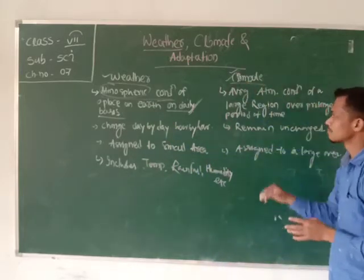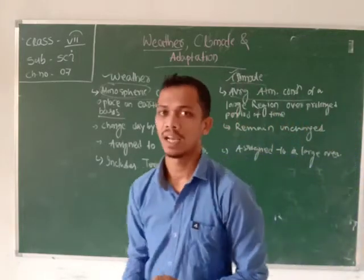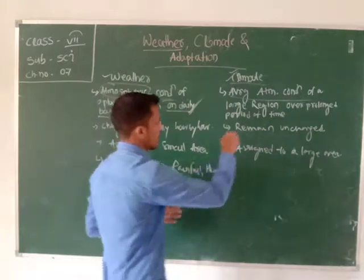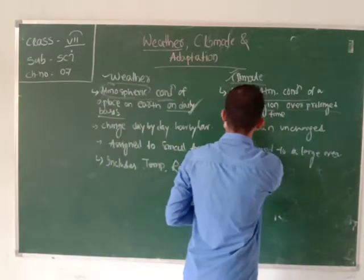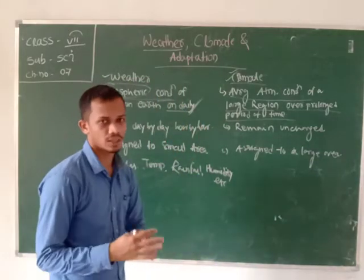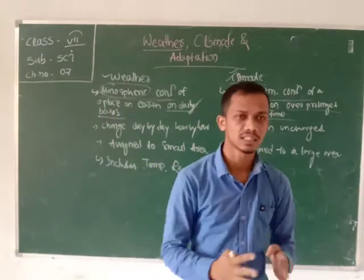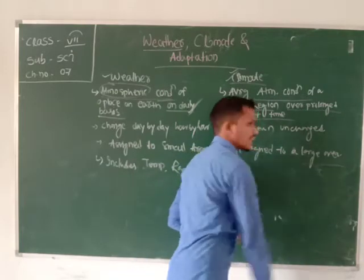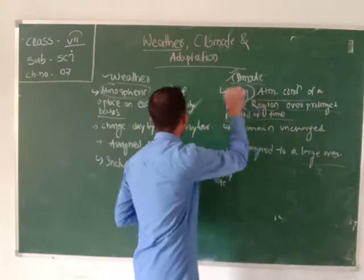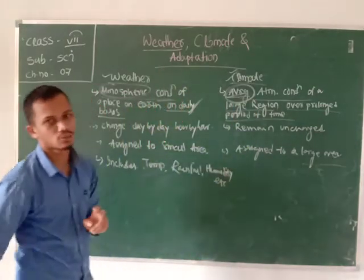As compared to weather, climate depends on the average atmospheric condition. It does not have an exact value. Climate deals with an average over a large region over a prolonged period of time — maybe 20, 30, or 40 years. It may cover a whole country. Climate does not give a totally rainy or totally sunny value; it gives an average input. The weather gives the exact input, but in climate we get average atmospheric conditions.